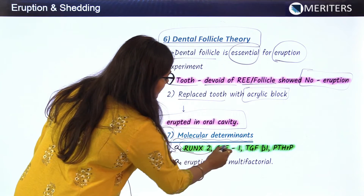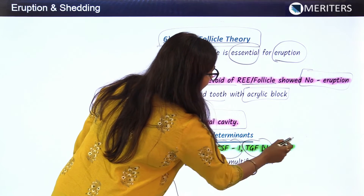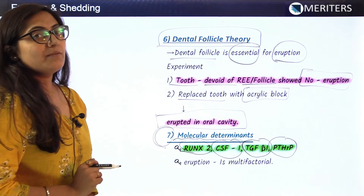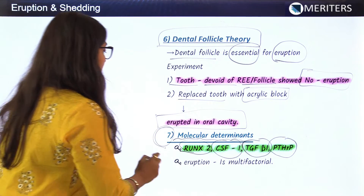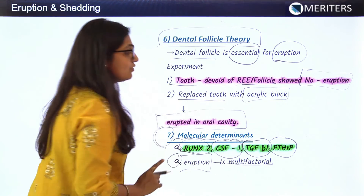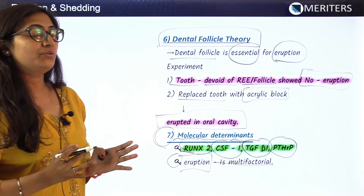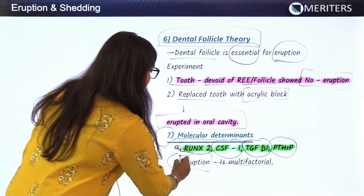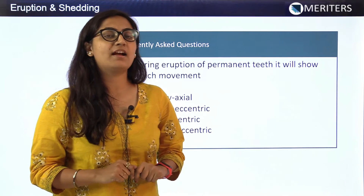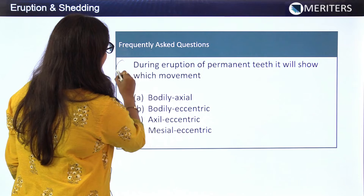The seventh and last theory is the molecular determinants theory. According to this theory, certain molecules like RANKL2, colony stimulating factor 1 (CSF-1), transforming growth factor beta-1 (TGF-β1), and parathyroid hormone-related proteins (PTHrP) are important in eruption of the tooth. This theory also states that eruption is a multi-factorial process, and no single theory fully explains tooth eruption.